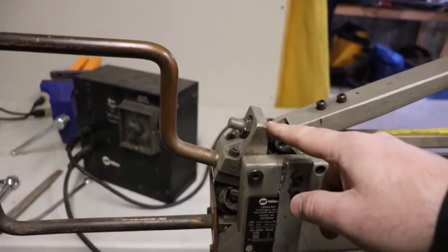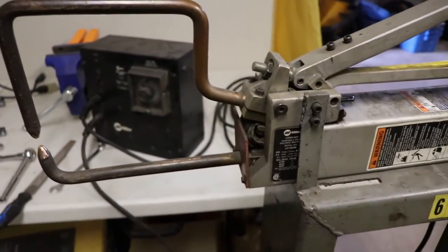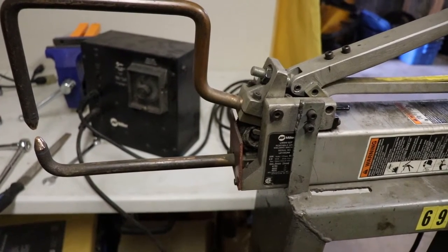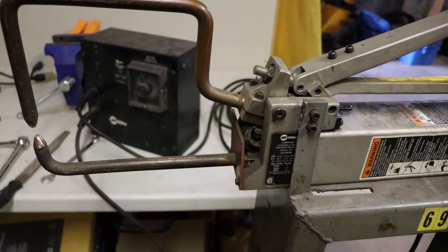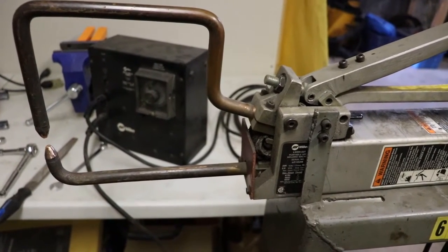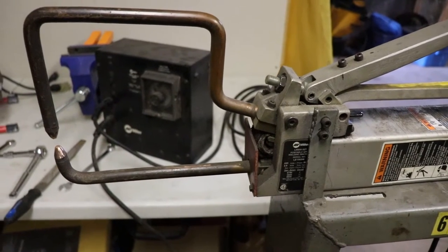So the last thing I'm gonna do is adjust the tong pressure. They talk about it in the manual and tell you the dangers of having too much pressure or too little pressure, but they don't tell you what the right pressure is. So I guess that's a bit of trial and error. So I'm gonna get that adjusted and then I'll try to spot weld something together.